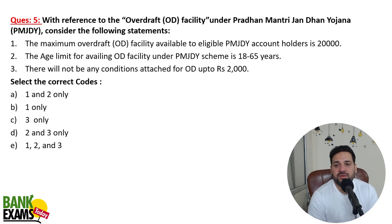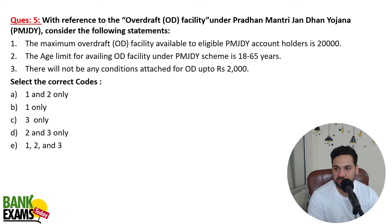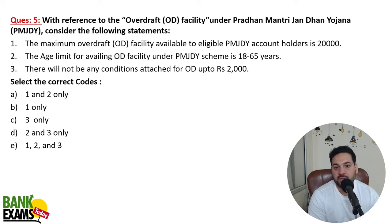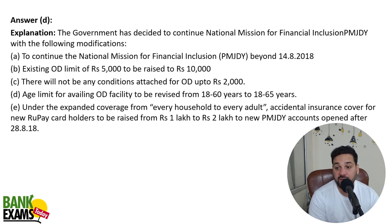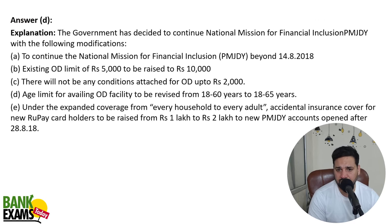With reference to the overdraft facility provided in the Jan Dhan Yojana account: the minimum age is 18 and the maximum is 65. An OD of up to 2,000 rupees is provided without any condition. The maximum overdraft facility is not 20,000 — it is 10,000 rupees, and it depends bank to bank.